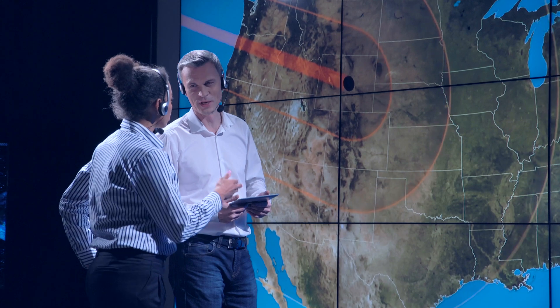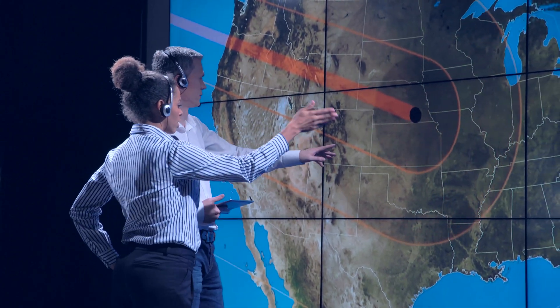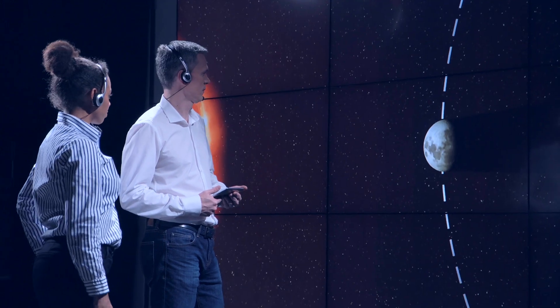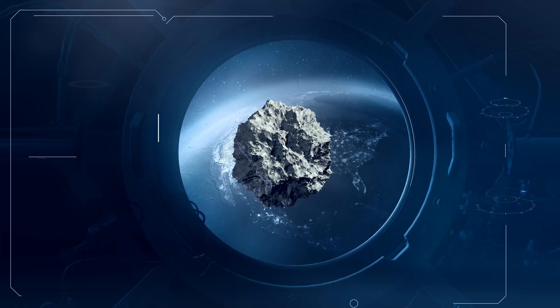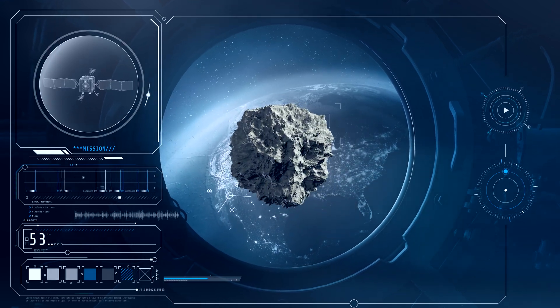However, NASA has already started its preparation for the worst-case scenario. It has launched its Double Asteroid Redirection Test mission, DART, which if successful, will be the Earth's defense mechanism against rogue asteroids.